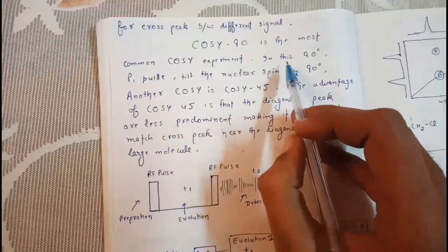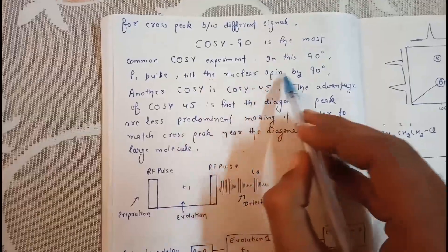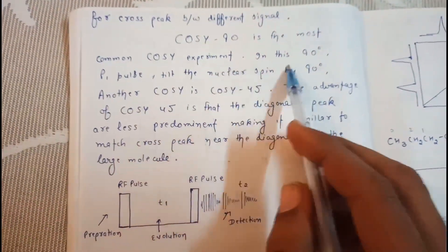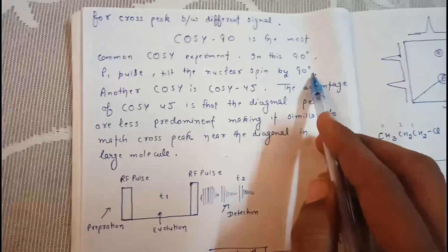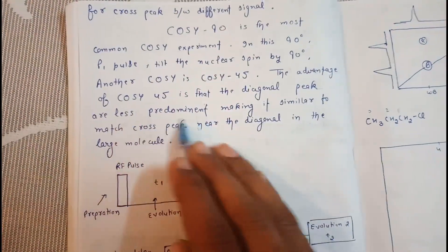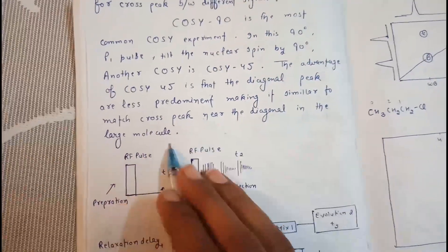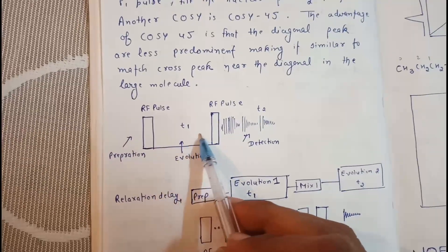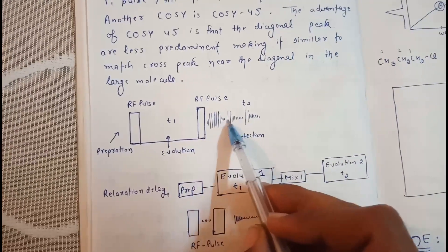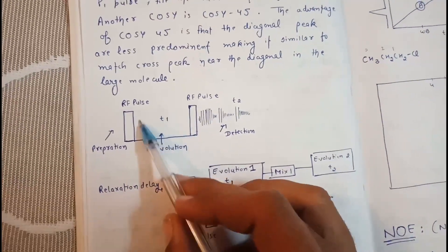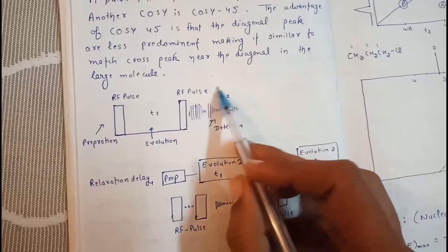COSY 90 is the most common COSY experiment. In this experiment, the 90-degree P1 pulse tilts the nuclear spin by 90 degrees. Another variant is COSY 45. The advantage of COSY 45 is that the diagonal peaks are less predominant, making it easier to match cross peaks near the diagonal in large molecules. The pulse sequence consists of a preparation time, an RF pulse, an evolution time t1, another RF pulse, and then detection at t2.